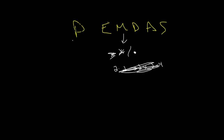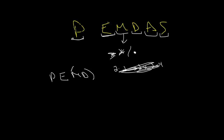So, we first do parentheses, making sure all parentheses are solved as far as we can. Next we check to make sure all our exponents are solved. Then after that we multiply everything, then we divide everything, then we do addition, and then subtraction. Now PEMDAS works so that multiplication and division are done together left to right, as well as addition and subtraction together left to right.